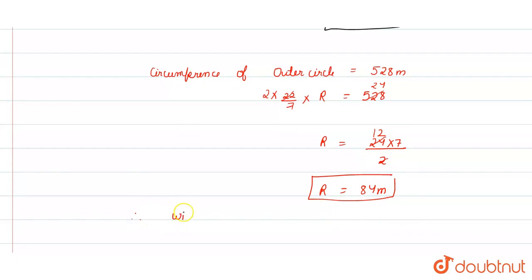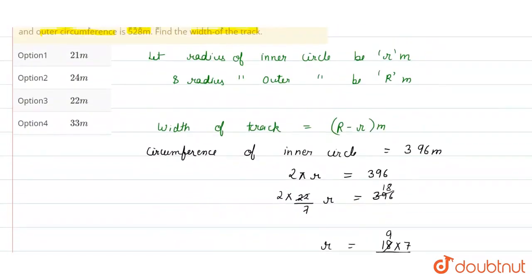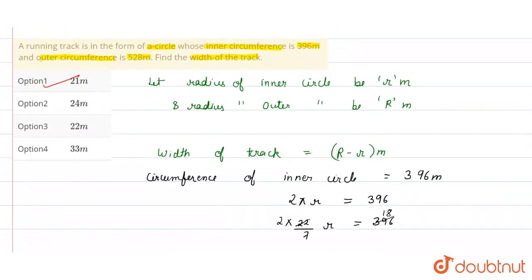Therefore, width of track is equal to R minus small r. So here will be 84 minus 63, which equals 21 meter. This is our correct answer. Option 1 is 21 meter. Thank you.